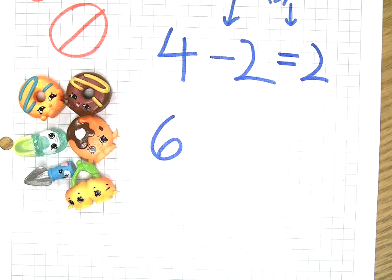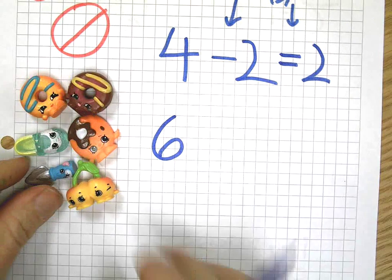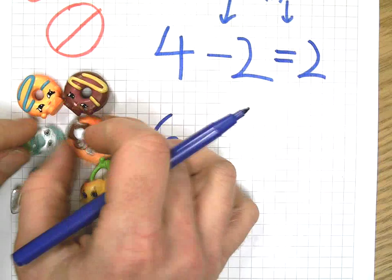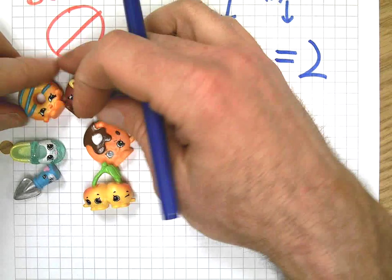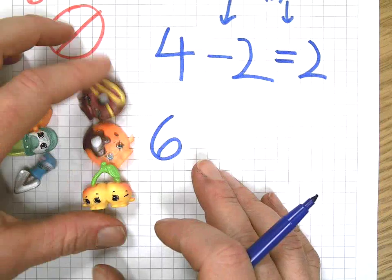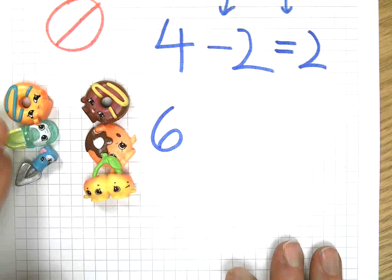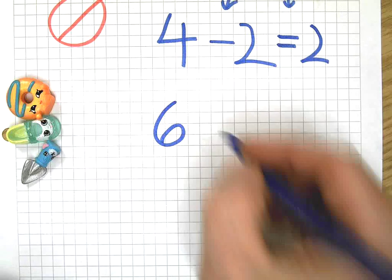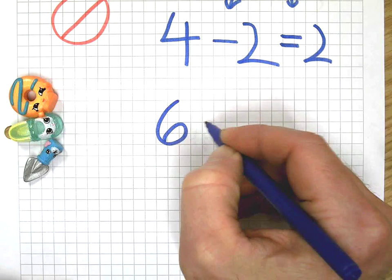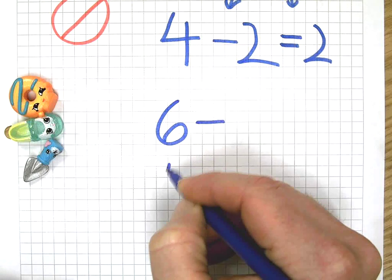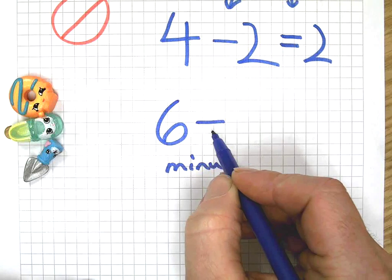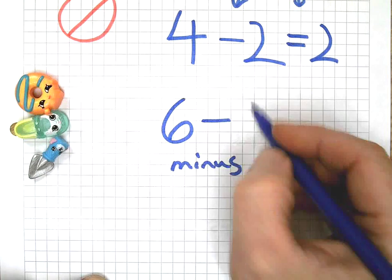What if I take away half of those? We had another video that talked about what half is. Half means if I can split what I have into two equal pieces - there's three there and three there, right? So I'm going to take away half. Take away, I'm going to write the minus sign. Six minus, how much was half?